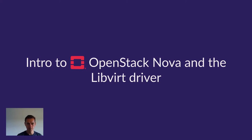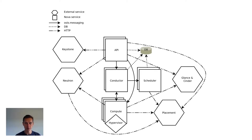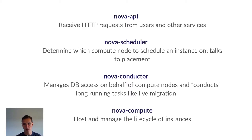Before we get into any of that deep dive stuff, I think it would benefit us to have a quick recap of what OpenStack Nova is, what the architecture of Nova looks like, and where the LibVirt driver fits into that. Nova's Compute project is responsible for managing the lifecycle of VMs, or instances in OpenStack terms. There are four main components within Nova: the Nova API service, the scheduler service, the conductor service, and the compute service.